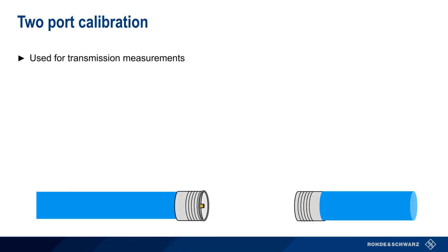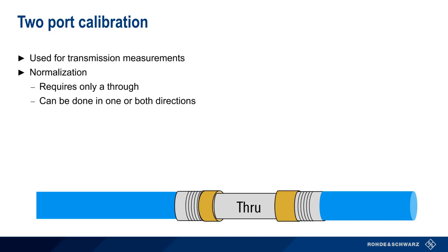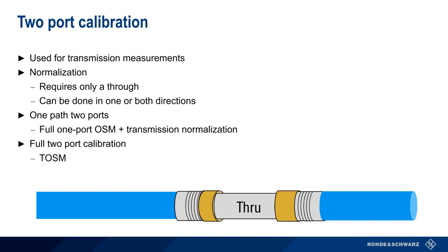Two-port calibrations are used for transmission measurements. Just like one-port calibration, we can make the distinction between the faster, less accurate normalization, and the slower but more accurate full calibration. As before, normalization for transmission measurements requires only a single calibration standard, in this case a through. The calibration can be done in one or both directions. Halfway between normalization and full calibration is something called one-path two-ports, which is basically a combination of our full one-port open-short match plus a transmission normalization. Because we're doing the full calibration on one port, this only improves our results in one direction. If we do the full calibration on both ports, this is a full two-port calibration. There are two variants of this, the through-open-short match and the unknown-open-short match. Let's look at each of these last two more closely.